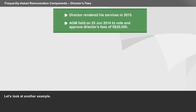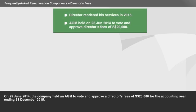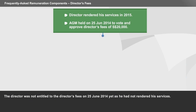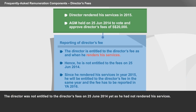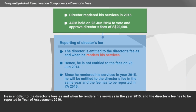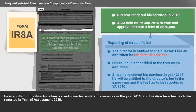Let us look at another example. On 25th June 2014, the company held an AGM to vote and approve director's fees of $20,000 for the accounting year ending 31st December 2015. The director was not entitled to the director's fees on 25th June 2014 yet, as he had not rendered his services. He is entitled to the director's fees as and when he renders his services in the year 2015, and the director's fees have to be reported in year of assessment 2016.